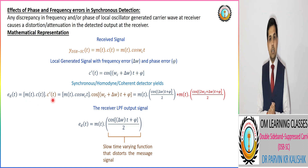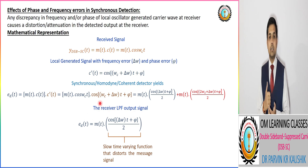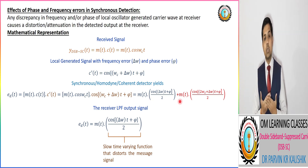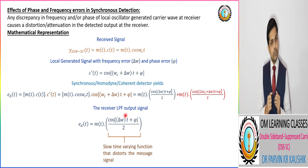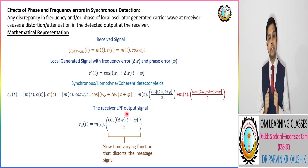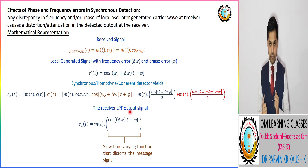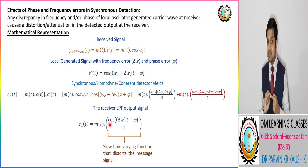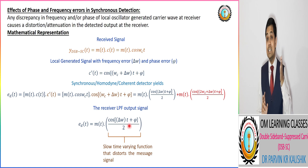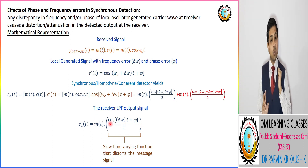The product modulator output e(t) is obtained by multiplying the received signal with the local oscillator signal. We then pass this signal through a low-pass filter with cutoff frequency equal to the maximum modulating frequency f. For a perfectly synchronized local oscillator signal, the result is m(t)/2.